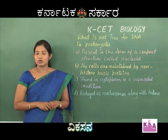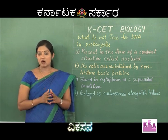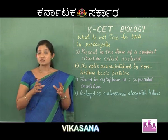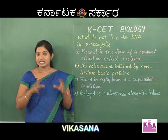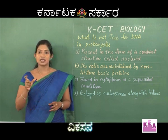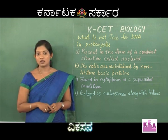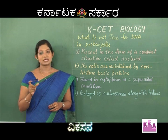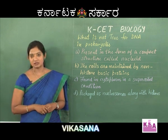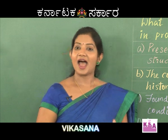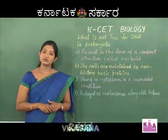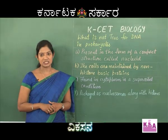The information, or what we call the biological information, is stored or hidden in the DNA in the form of three codes, what we call triplet genetic codes. These are nothing but nitrogen bases. As we proceed, we'll go through the different aspects of genetic material.